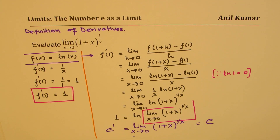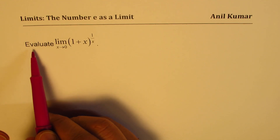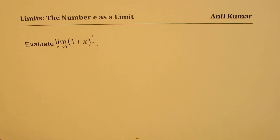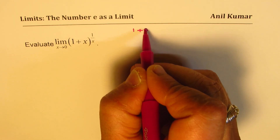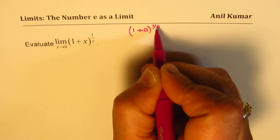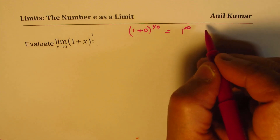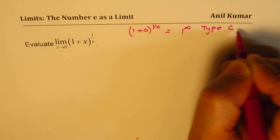Now in part 3, let us see how to use L'Hôpital's rule to find the same limit. We need to evaluate the limit when x approaches 0 of (1 plus x) to the power of 1 over x. If we substitute 0, we get 1 plus 0 to the power of 1 over 0, which is 1 to the power of infinity. So that is our type C indeterminate.